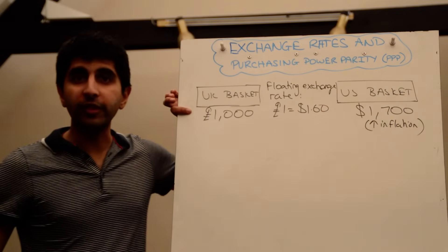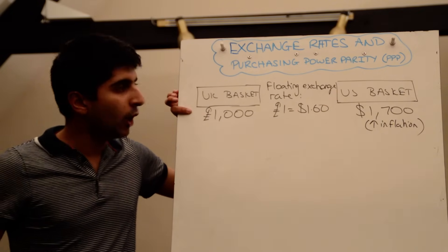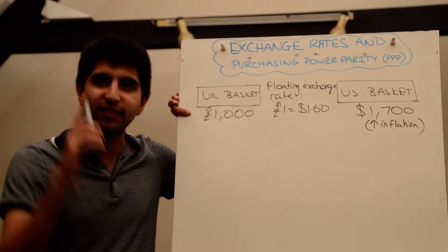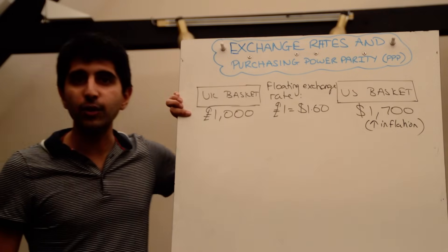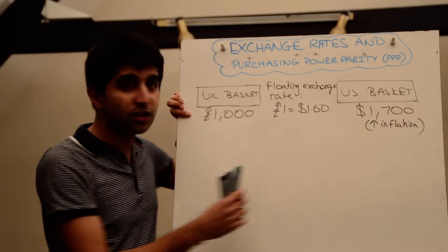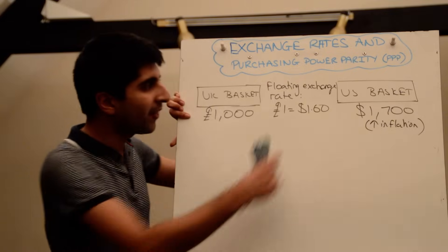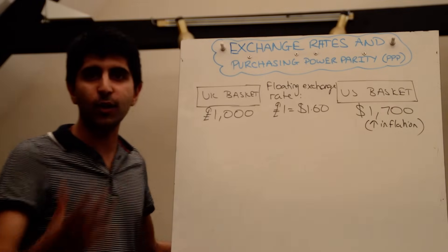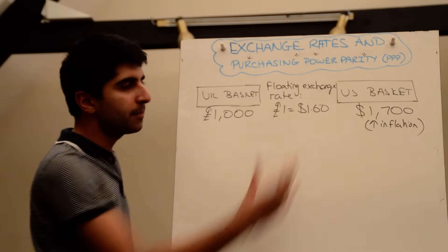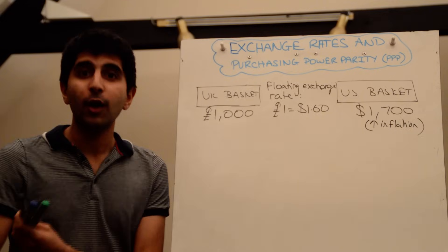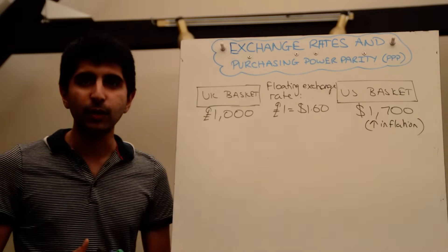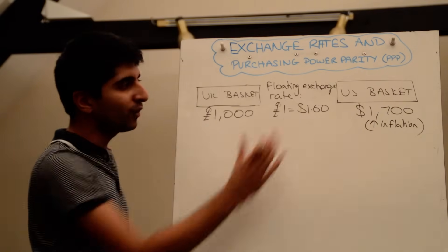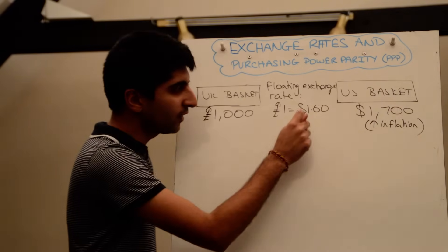£1,000 worth of goods and services in the UK, when converted to US dollars, cannot buy exactly the same level of goods and services in the US. If we convert what we can buy in the UK for £1,000, we get $1,600 in the US, but that can't buy the same level of goods and services there — we're going to be $100 short. The pound is undervalued; it's not taking us as far in the US and is not reflecting purchasing power parity.